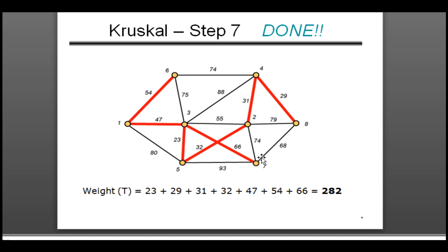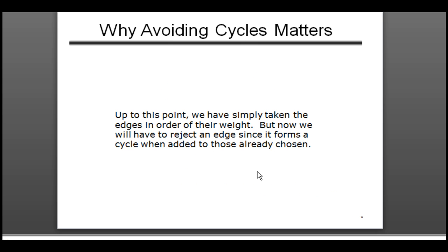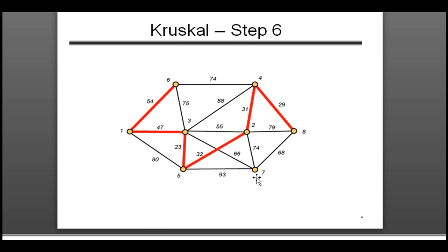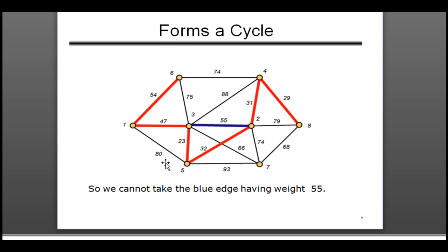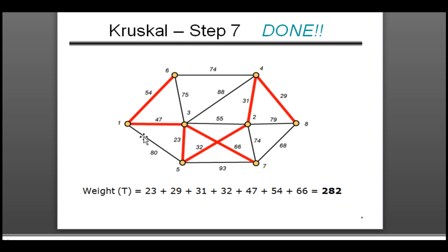If we take the blue vertex it would form a cycle, so we don't take it. The last one connects with weight 66 — since 68 is larger than 66, we obviously take 66. You know the whole graph is complete when all vertices are connected with an edge. This was Kruskal's algorithm, and this is the total weight after connecting all the marked edges. I hope you understood — please subscribe and give a thumbs up if you liked the explanation!